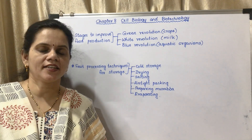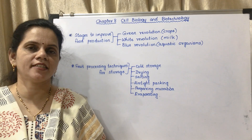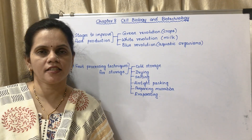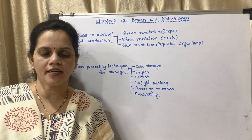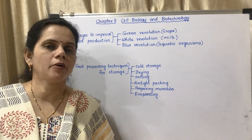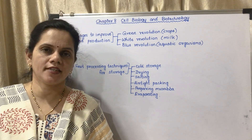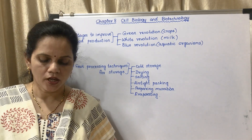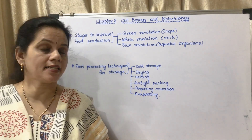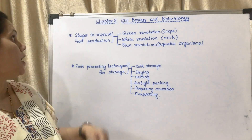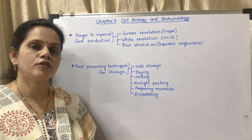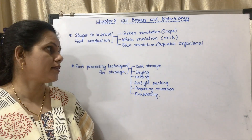Hello everyone, welcome to today's lecture. This is the last lecture for chapter eight. Today we will be studying about the important stages in agricultural development on page number 96 — the stages to improve food production.